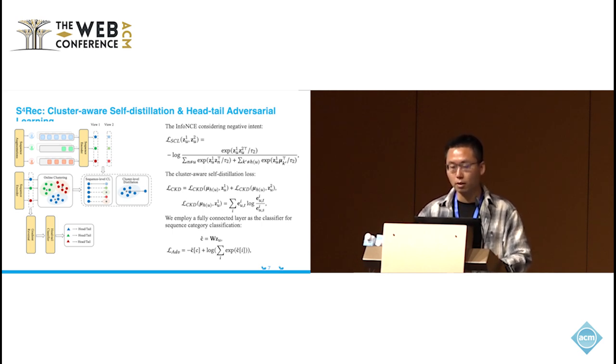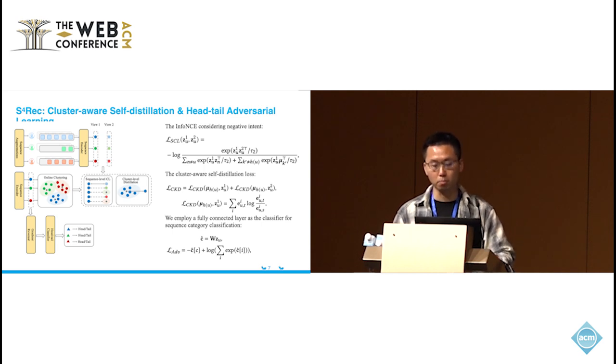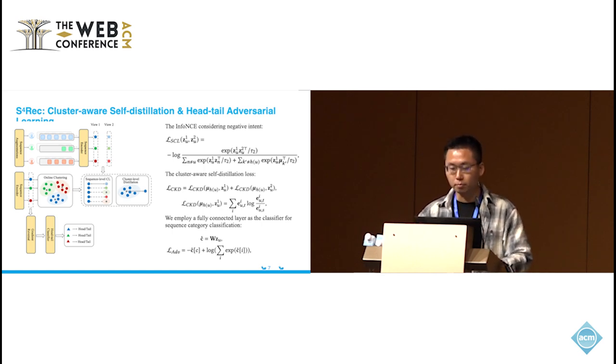To achieve this, we enhance the recommendation model by introducing a classifier that uses the sequence embedding as input. The objective is to train the classifier to predict the category of each sequence. The encoder should try to generate a sequence embedding that can deceive the classifier. This is a complete introduction to our method. Finally, we adopt a multi-task strategy to jointly optimize all the tasks.